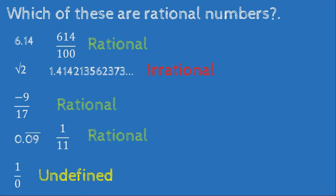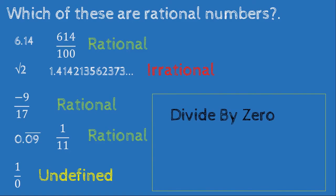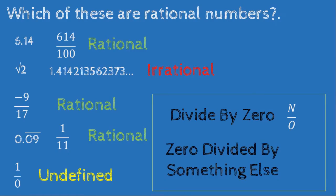Finally, 1 over 0 is undefined because we are dividing by zero. Remember: if we have a number n over 0, that's a 'no' — do not divide by zero, because that is undefined. However, if we have 0 divided by something else — 0 over k — that is okay. So: divide by zero, that's a no; zero divided by something else, that's okay.